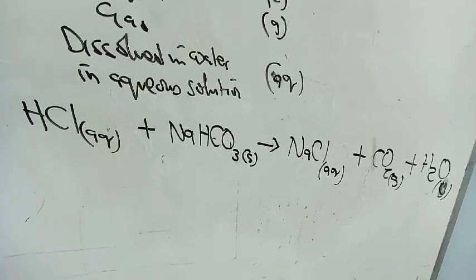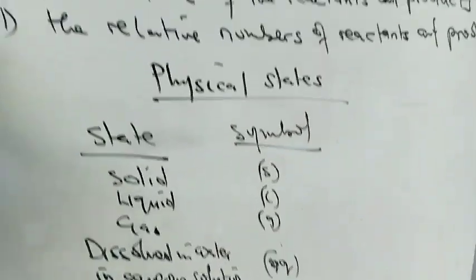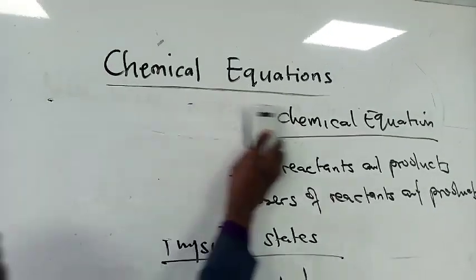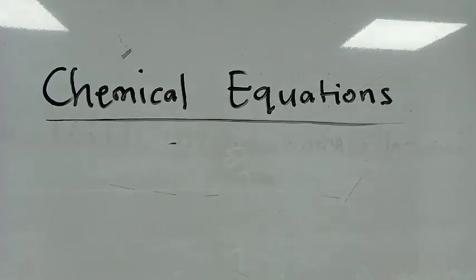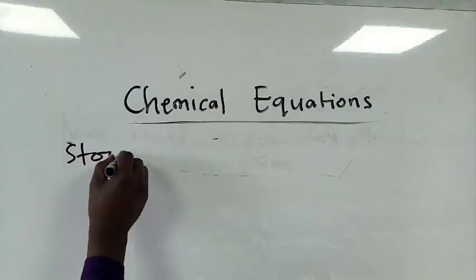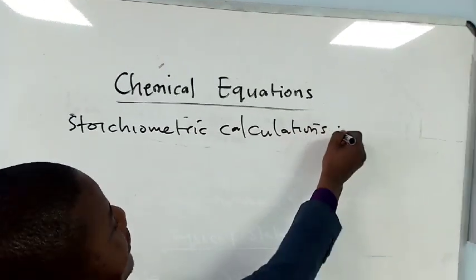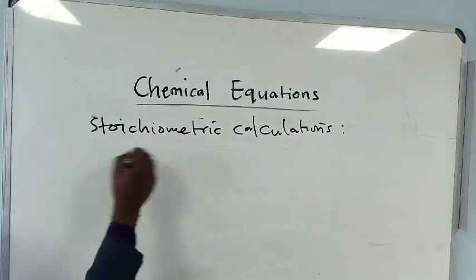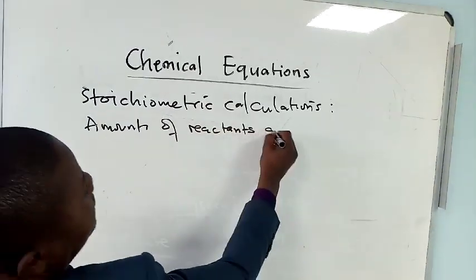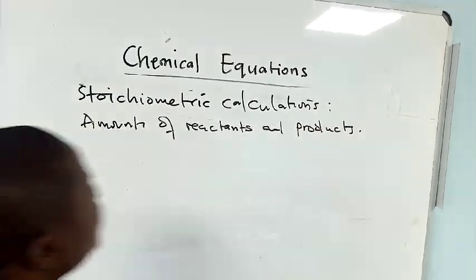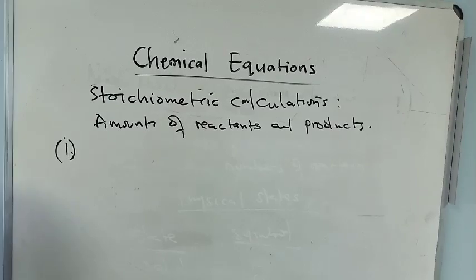We need to specify the state symbols involved. Now we can look at stoichiometric calculations — how we can calculate the amounts of products and reactants. There are steps that must be followed to perform these stoichiometric calculations. Step number one: balance the chemical equation.